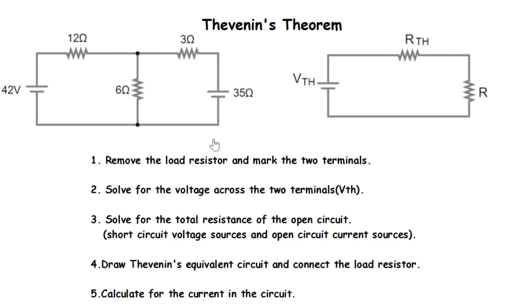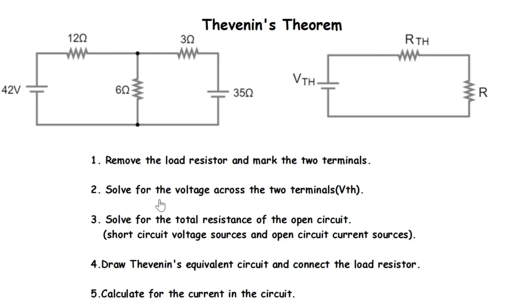To apply Thevenin's theorem, I have to follow some steps. The first thing we have to do is remove the load resistor and then mark the two terminals. The load resistor is the resistor whose current or voltage you have to find. So when you remove the load resistor, you mark the two terminals. After that, you solve for the voltage across the two terminals.